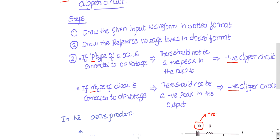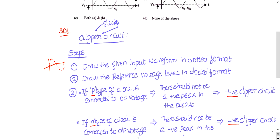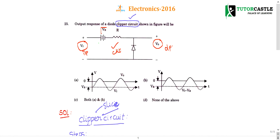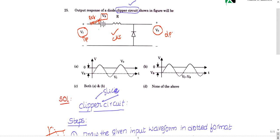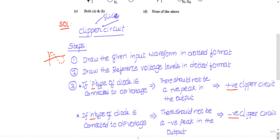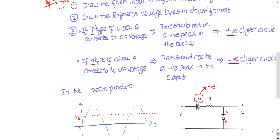Step one: draw the given input waveform in dotted form. If he gives a sine wave, draw that sine wave input in dotted fashion. Now he will give a reference voltage in the circuit — draw the reference voltage levels in dotted form. Here Vb is given; this is called the reference voltage. Since Vb is positive, draw a horizontal line on the positive side of the graph.